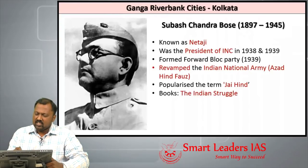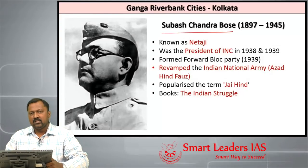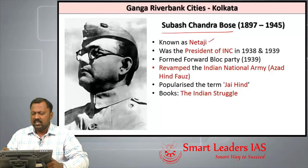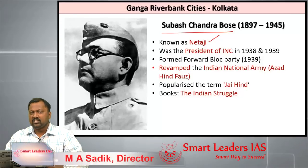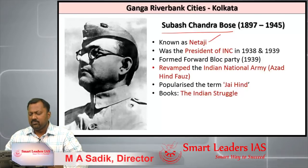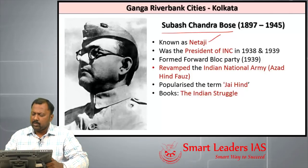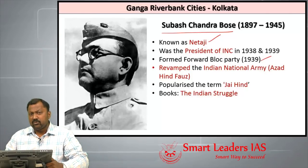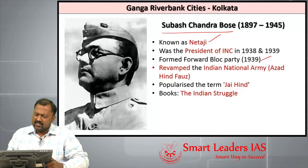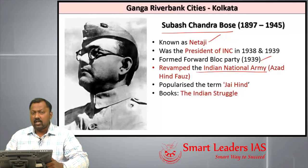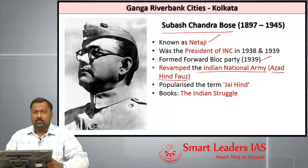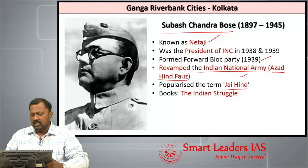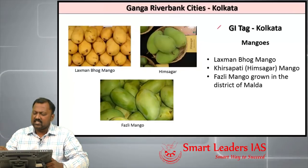Subhas Chandra Bose (1897–1945) was referred to as Netaji. He was president of the Indian National Congress in the 1938 and 1939 sessions, but resigned in 1939 due to differences. He then formed the Forward Bloc in 1940, escaped from India, and assisted in the reorganization of the Indian National Army (INA), popularly called Azad Hind Fauj. He popularized the slogan 'Jai Hind' and authored The Indian Struggle.